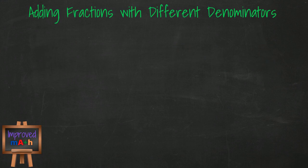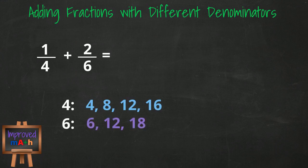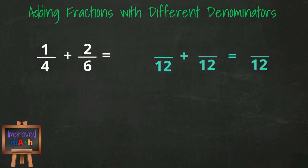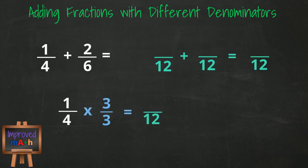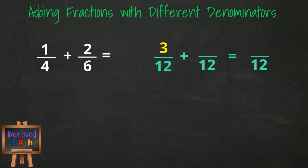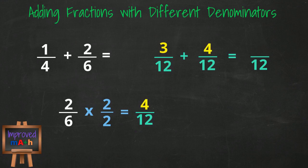Our next fractions to add are 1 fourth plus 2 sixths. Again, we don't have the same denominator, so let's look at some multiples. Multiples of 4 are 4, 8, 12, 16. Multiples of 6 are 6, 12, and 18. Looks like 12 is the one we'll go with. The denominator 4 goes into 12 three times, so we multiply the numerator by 3 and get 3 over 12. We convert the next fraction by multiplying the denominator by 2, and when we multiply the numerator by 2, we get 4 over 12. We add the numerators together and get 7 over 12. There are no common factors in 7 and 12 except for 1, so the fraction is already in its simplest form.